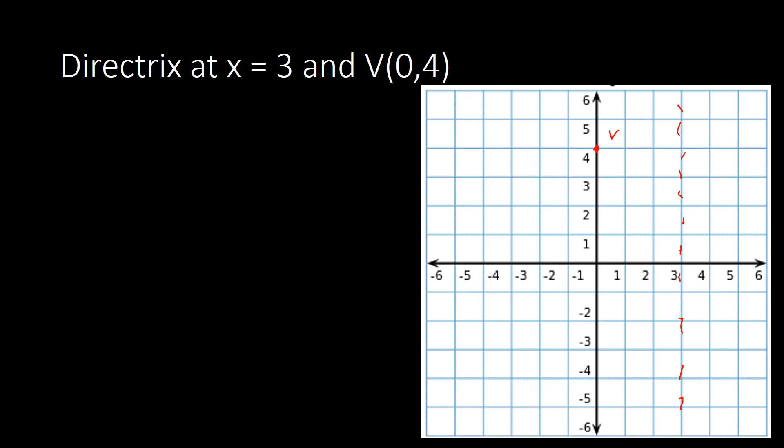Once you plot those, you would know the opening of the parabola. Since our directrix is on the right side of the vertex, this is most likely a parabola opening to the left side. It will be best for you to plot your given values so that you would know first the opening of the parabola, because using that we can determine our standard equation.